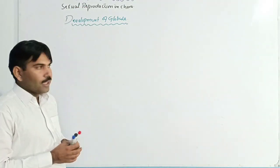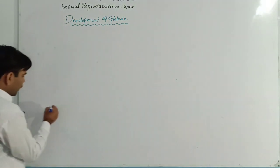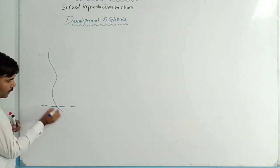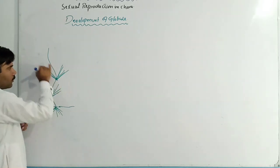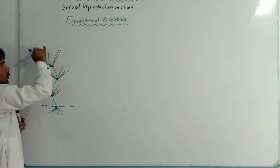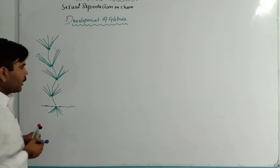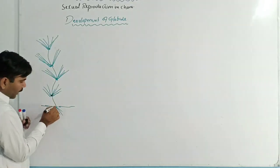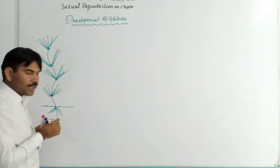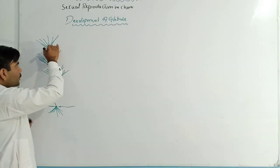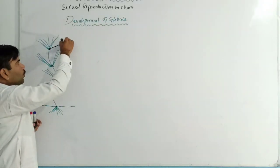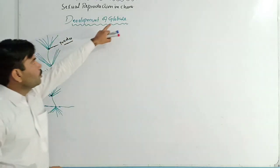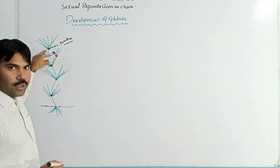This globule is developed on the nodal cell. If you look at the plant body of Chara, there are rhizoids at the base. This structure has nodes and the distance between two nodes is known as internode. The globule is formed at the point of such nodes, so we can say that the globule is formed from the nodal cell.